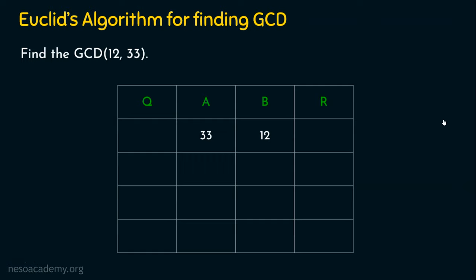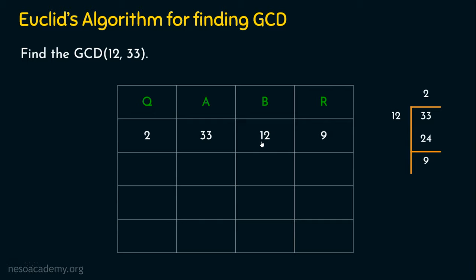So A is 33 and B is 12. We do A mod B, that is 33 mod 12. When you divide 33 by 12, 12 times 2 is 24, and the remainder is 9. So quotient is 2 and remainder is 9. First row is done. B is not zero, so we repeat. Now B goes to A and the remainder goes to B — so 12 goes to A and 9 goes to B.